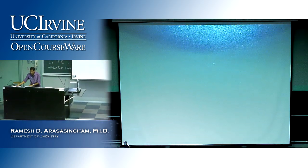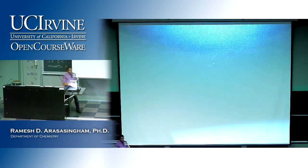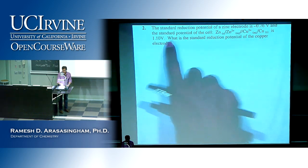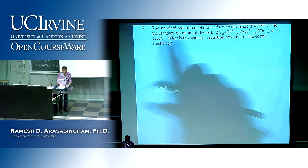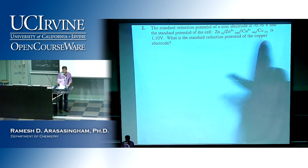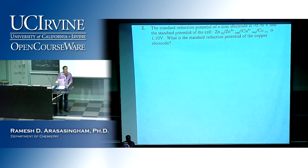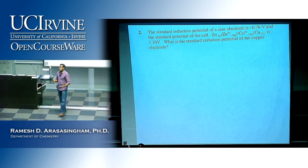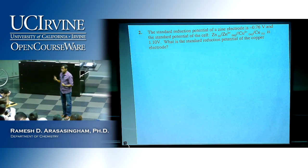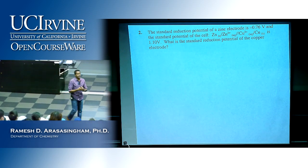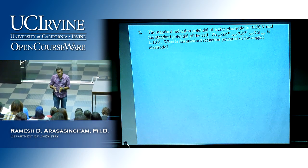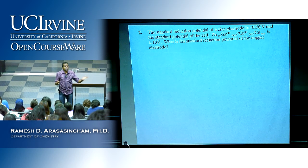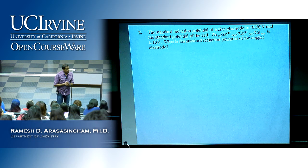There's one problem on the worksheet: the standard reduction potential for the zinc electrode is given, and the standard potential for the Daniell cell is 1.10 V. What is the standard potential for the copper electrode? That's exactly what we just calculated. You can encounter questions where you're given the cell potential and one electrode's potential and must find the other, or use a table to calculate what cell potential you'd measure.